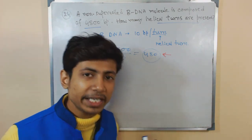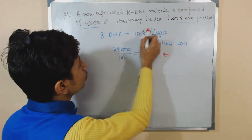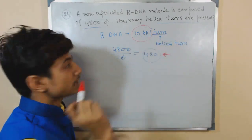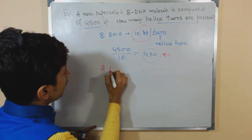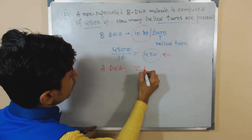Very simple, very easy. Relies on only one fact that you should know: 10 base pairs per turn is the number for B-DNA. Similarly, this question can be given for A-DNA and also be given for Z-DNA.